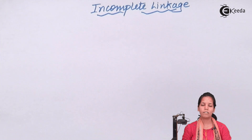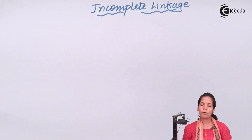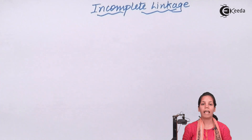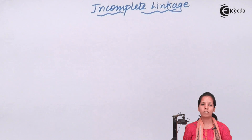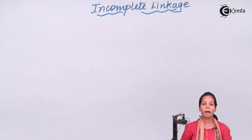Crossing over decides you having different characteristics — some from your father and some from your mother. This crossing over tends to give differences or variation during inheritance, and incomplete linkage makes sure that crossing over happens and you get a variety of characteristics. For example, your hair color can match your father but your skin color could match your mother.